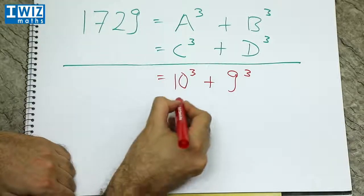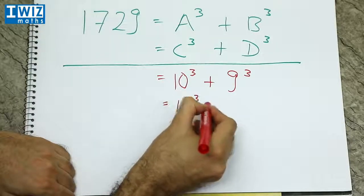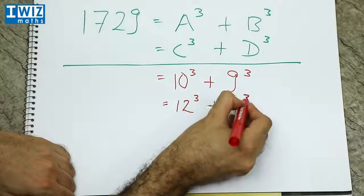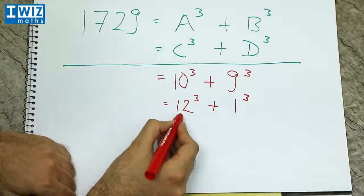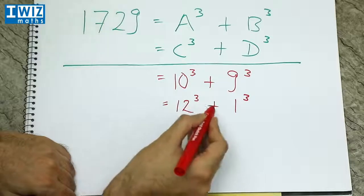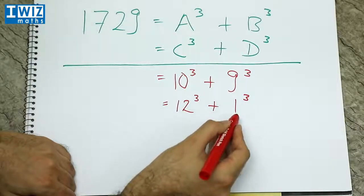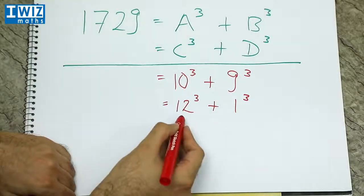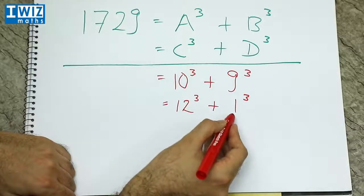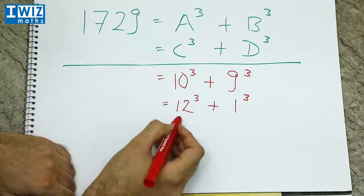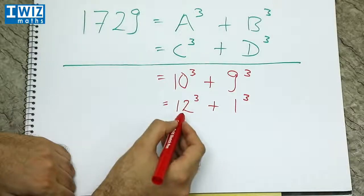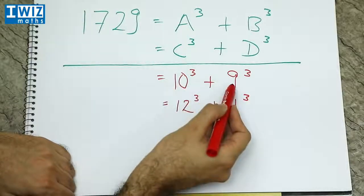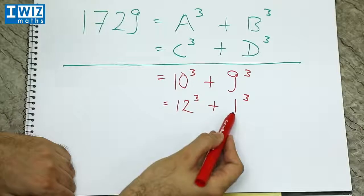It can also be written as 12 cubed plus 1 cubed. So 12 cubed is 1728 plus 1. So 1 cubed is just 1. So 1728 plus 1 gives us 1729. So 1729 can be written as the sum of two cubes in two different ways.